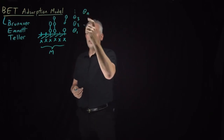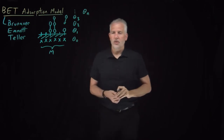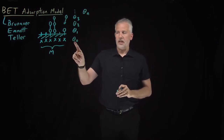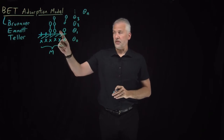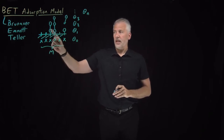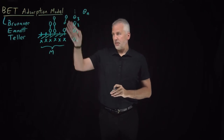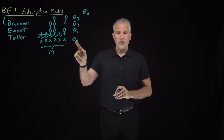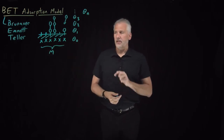In addition to theta 1 and up, we can have theta 0, which tells us what fraction of the surface has zero molecules adsorbed to it. In this specific example, these three surface sites have zero molecules adsorbed to them, so theta sub 0 would be equal to one half — half the surface has no molecules adsorbed.